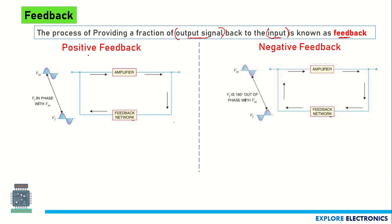In feedback we have two types: positive feedback and negative feedback. In positive feedback, you can see the amplifier with a feedback network connected in parallel. We give an input signal V_IN and get an output V_0. That output is fed into the feedback network, which produces V_F. If V_F is in the same phase as V_IN, with no phase difference, we call it positive feedback.